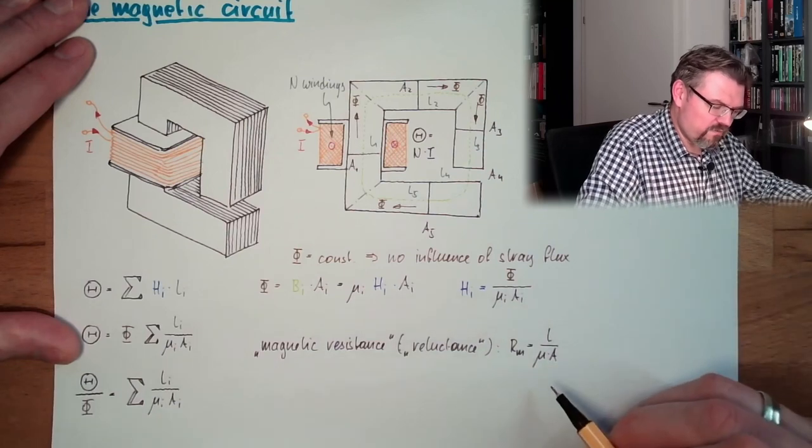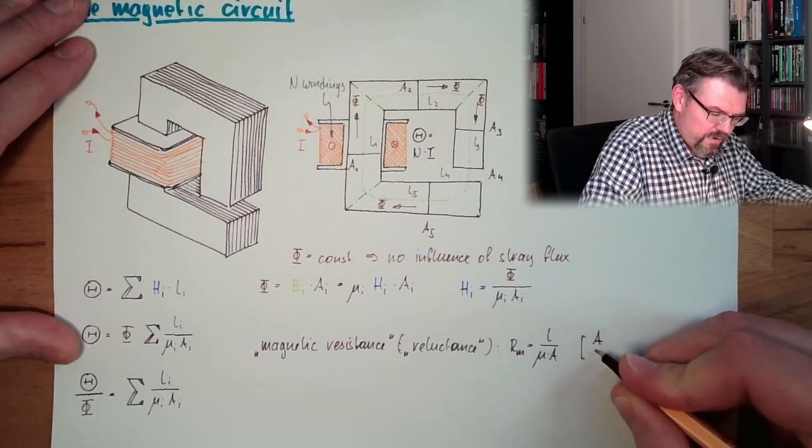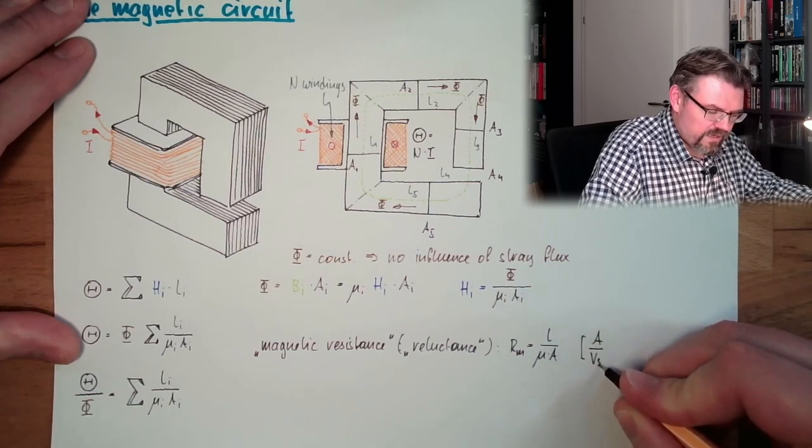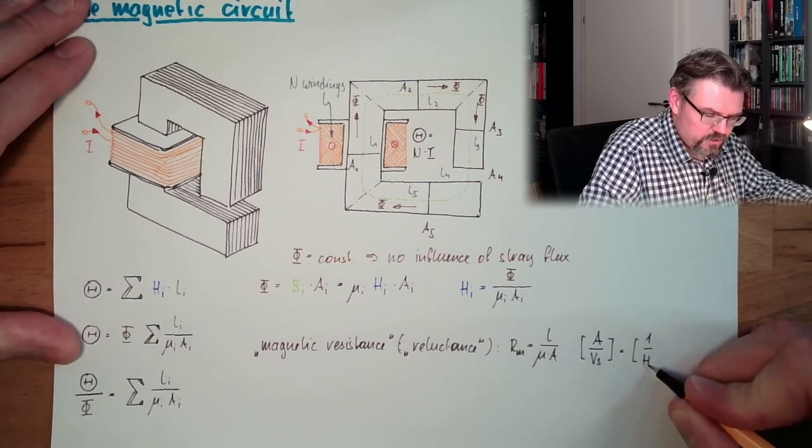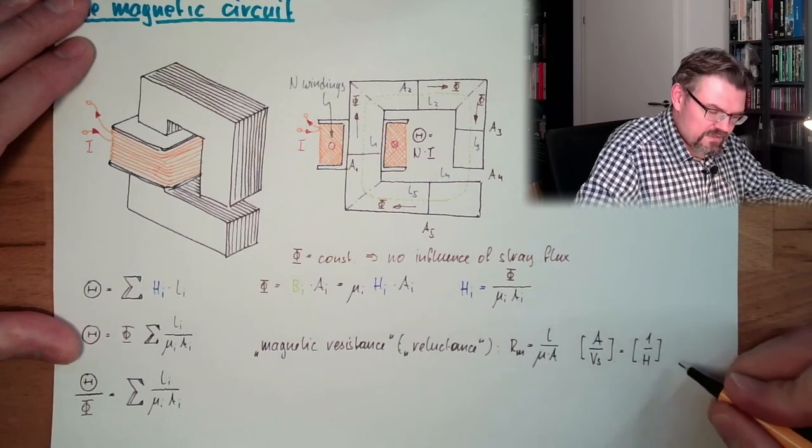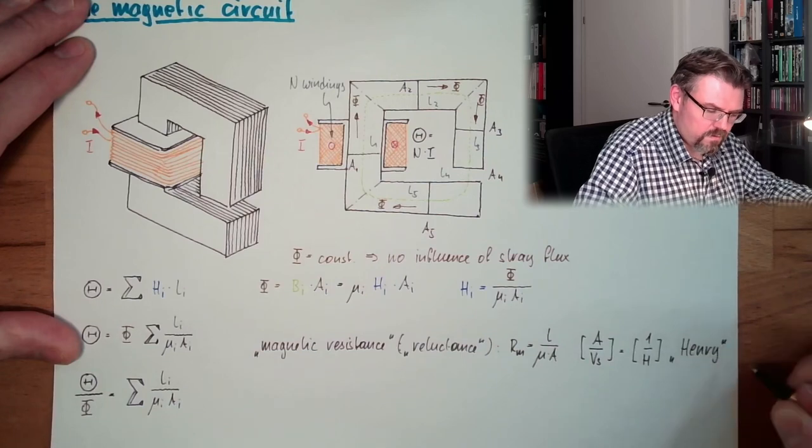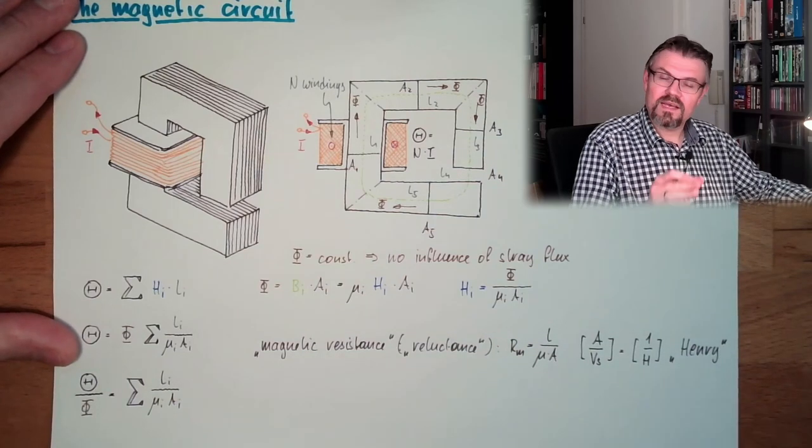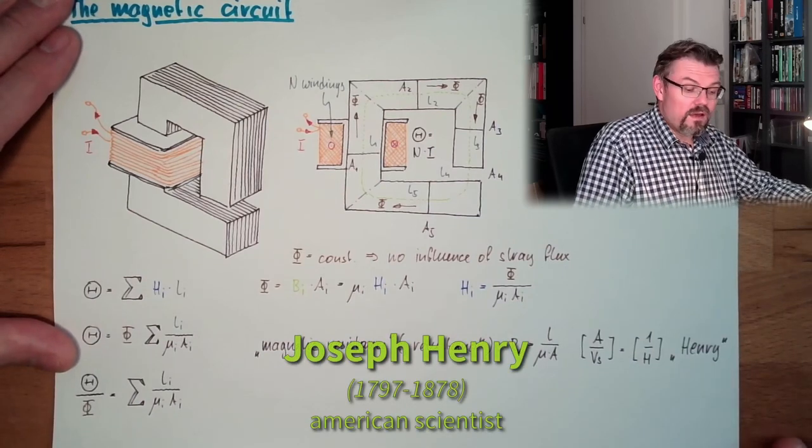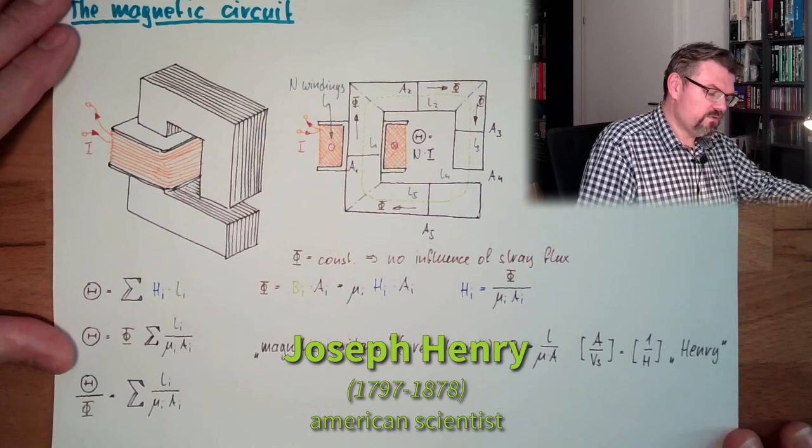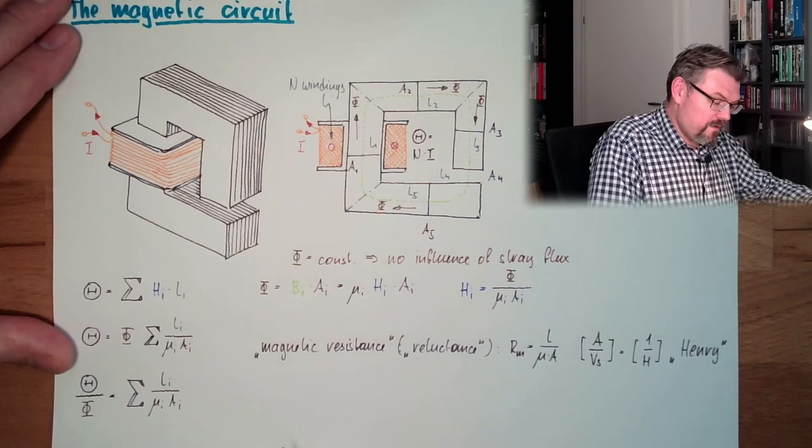What is the unit? The unit is ampere by volt second. And this is also 1 divided by H. And this is called Henry. It's named after a historic, real smart man. Magnetic resistance.